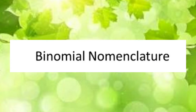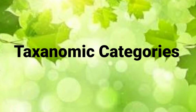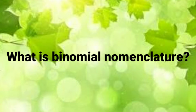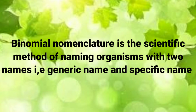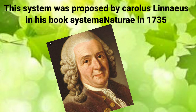In this video we shall learn about binomial nomenclature, rules of binomial nomenclature, and taxonomic categories. Binomial nomenclature is the scientific method of naming organisms with two names: the generic name and the specific name. The generic name is also known as genus and the specific name as species. This system was proposed by Carolus Linnaeus in his book Systema Naturae in the year 1735.